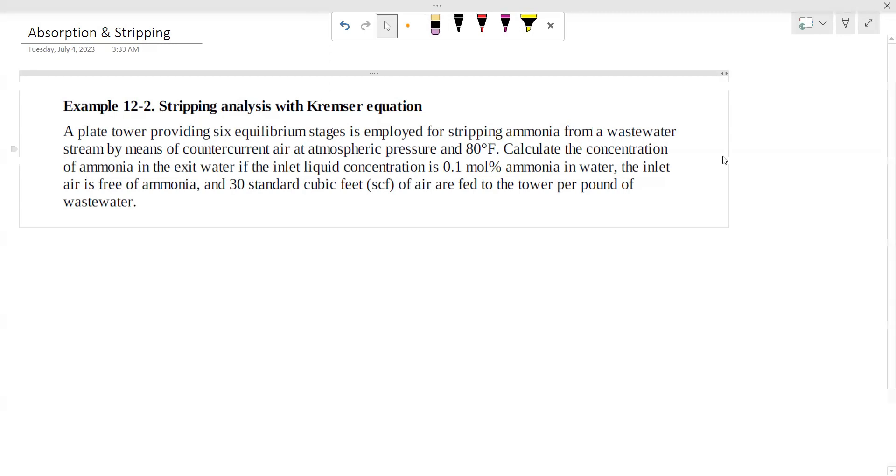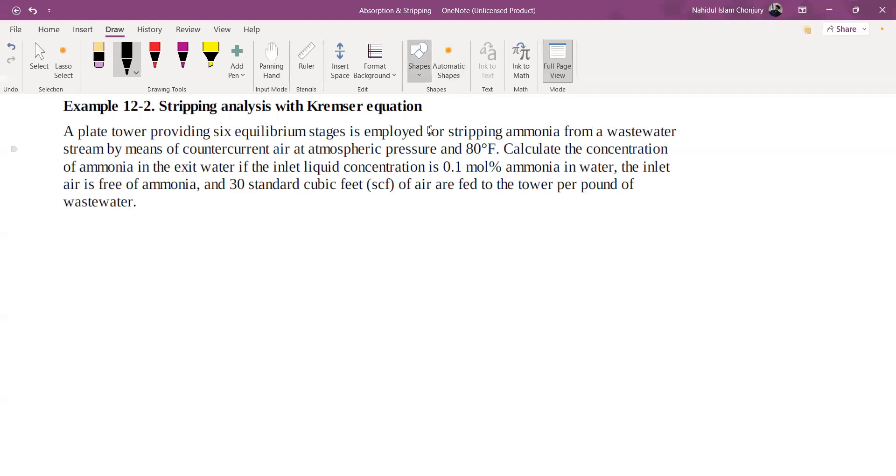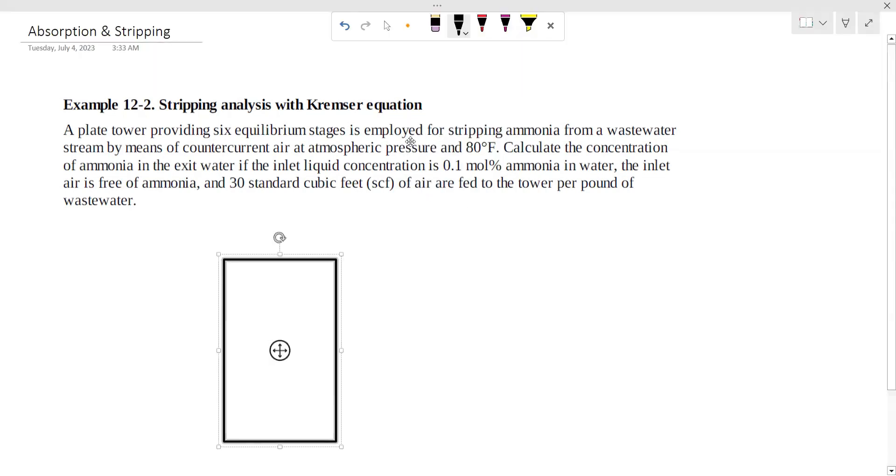The air is free of ammonia and fed to the tower per pound of wastewater. The first step is to draw a flowchart. P is equal to 1 atmosphere and temperature is 80 degrees Fahrenheit.